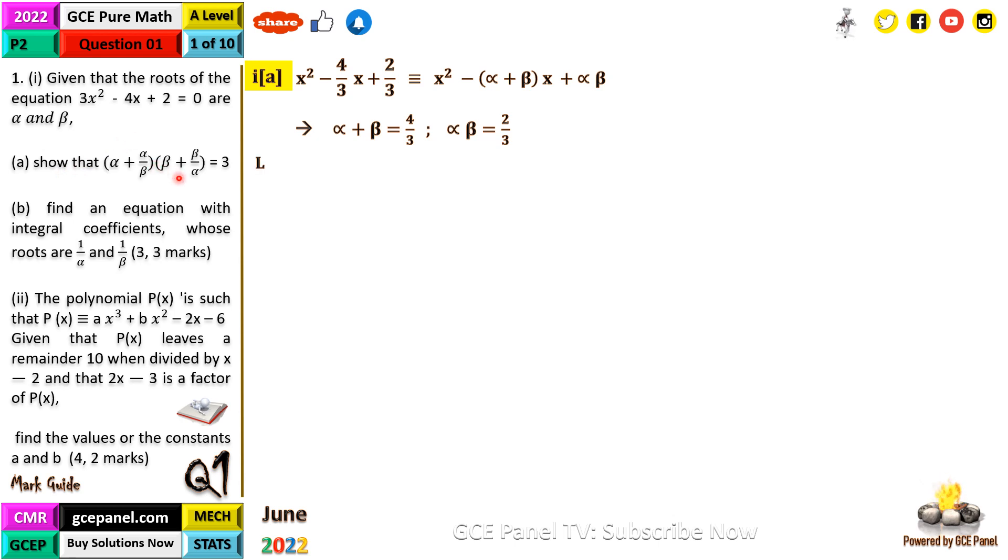Working with the left-hand side to get the result on the right, we expand and simplify: αβ + β + α + 1. We already have αβ = 2/3 and α + β = 4/3, so that gives us 2/3 + 4/3 + 1, which equals 3, as required.